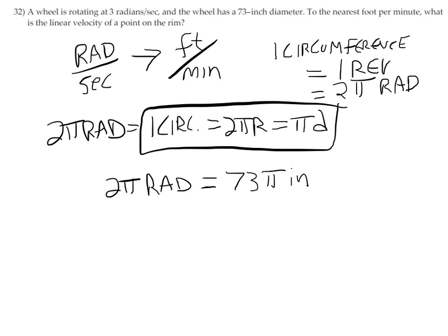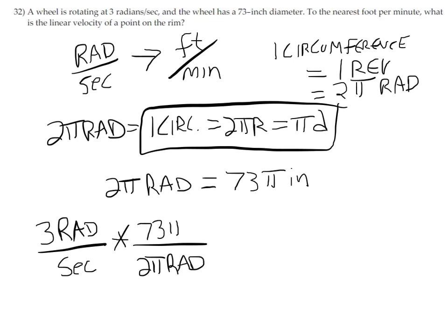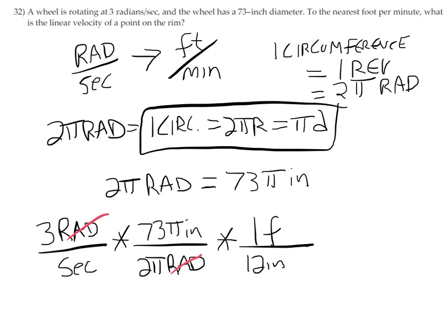So now we can go to what we have: 3 radians per second. We can start converting. For example, 2π radians is 73π inches. That will get us to inches per second. They want feet per minute, so we need more conversion factors. I know 12 inches in one foot. I'm putting the inches on the bottom so I can cancel the other inches on top.